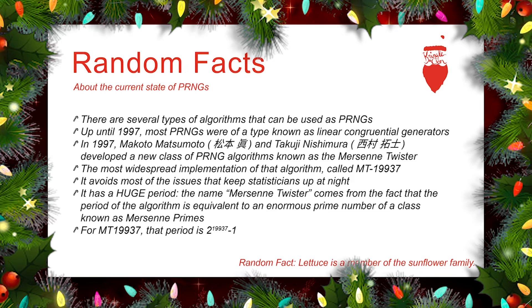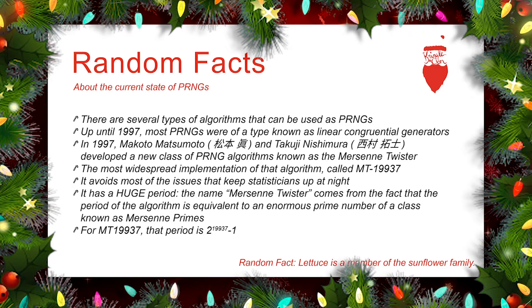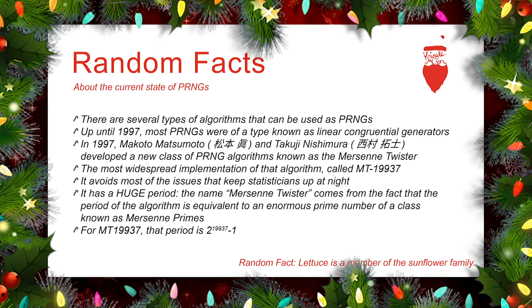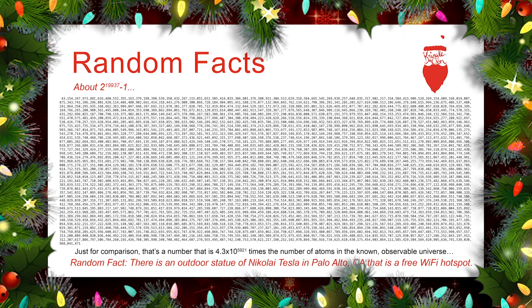The Mersenne portion of the name comes from the fact that the period of the pseudo-random number generator can actually be set, and it's set based on a class of prime numbers known as Mersenne primes. For example, the period for the MT19937 Mersenne Twister is based on the prime number that is 2 to the 19,937 minus 1. Here is that number.